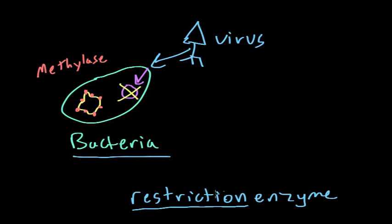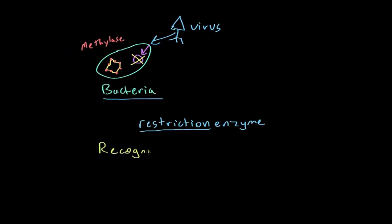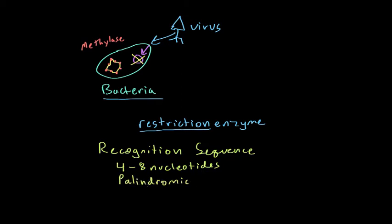Now in order for a restriction enzyme to work, it has to be able to recognize DNA, and it recognizes something known as a recognition sequence. A recognition sequence is simply a sequence of DNA that's normally 4 to 8 nucleotides long and is normally known as palindromic.